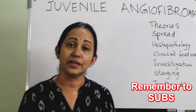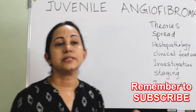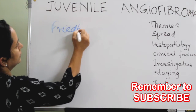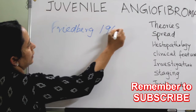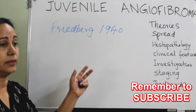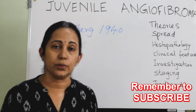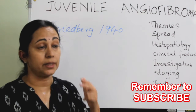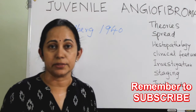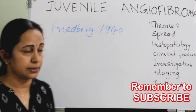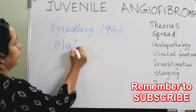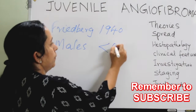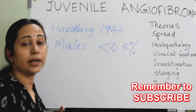Angiofibroma was recognized very early in ancient times by Hippocrates, but the term 'juvenile angiofibroma' was coined by Friedberg in 1940. It is a benign but locally invasive tumor with the property of invading into the intracranial cavity. It occurs exclusively in males, though there are very rare reports in females, and it constitutes less than 0.5% of all head and neck tumors.